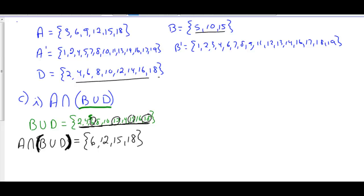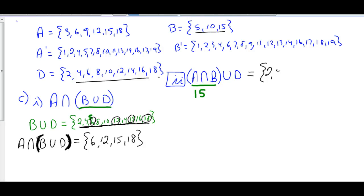Question C part 2: (A intersect B) union D. A intersect B we've already done — that's the number 15. Union that with set D: 2, 4, 6, 8, 10, 12, 14, and union with 15, then 16, 18.